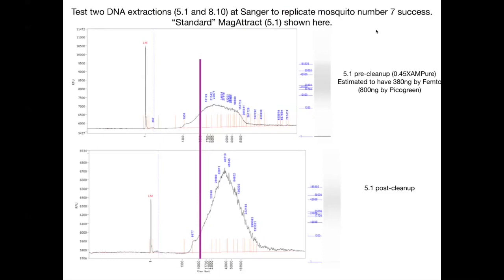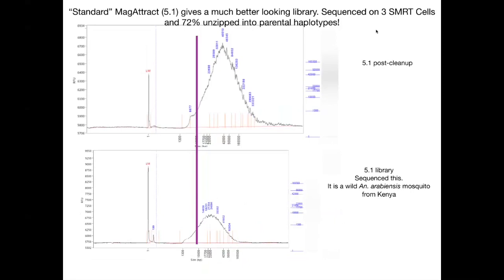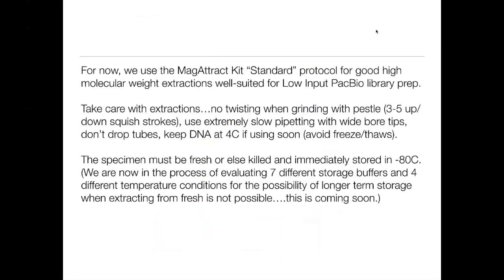Using the standard MagAttract kit on another wild mosquito, we got about 380 nanograms out of this mosquito. After cleanup to remove some smaller fragments, the resulting library was sequenced across 3 SMRT cells. This is a wild mosquito, and we anticipated that because of the high variation, we would be able to parse reads into parental haplotypes pretty well. In fact, 72% of the genome can be parsed into parental haplotypes, which is pretty amazing.